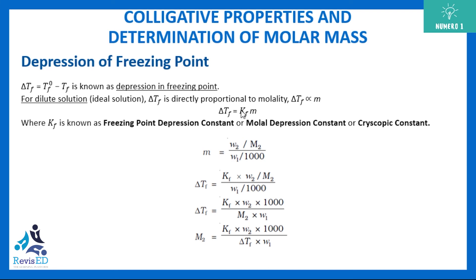Introducing the freezing point depression constant Kf (also called molar depression constant): delta Tf = Kf × m. Expressing molality as moles of solute divided by kg of solvent, you can solve for M2, the molecular weight of the solute.